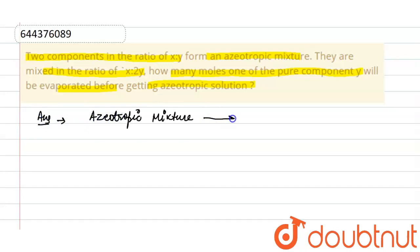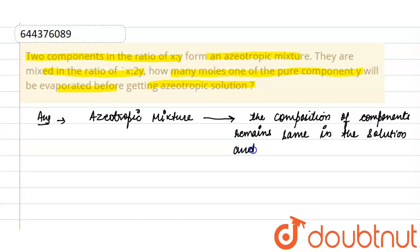Azeotropic mixture is a mixture in which the composition of the components remains the same in the solution and in vapor phase. Azeotropic mixture is a mixture where the composition of components remains the same in the solution as well as in vapor phase. In this question,